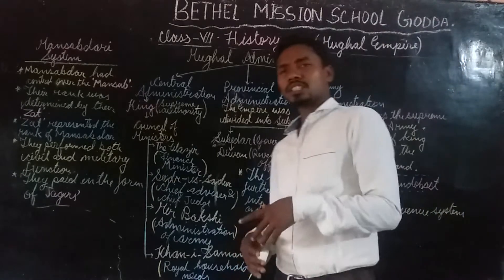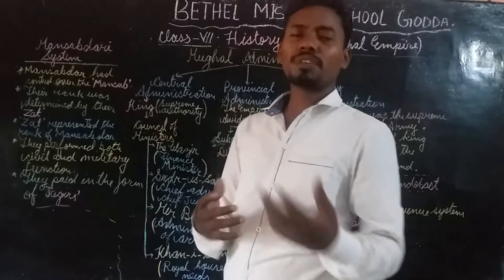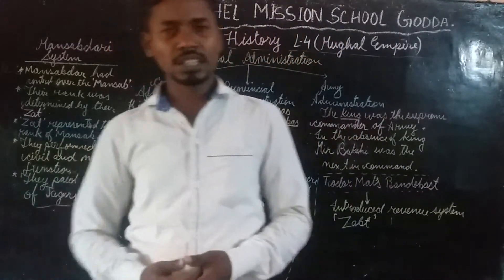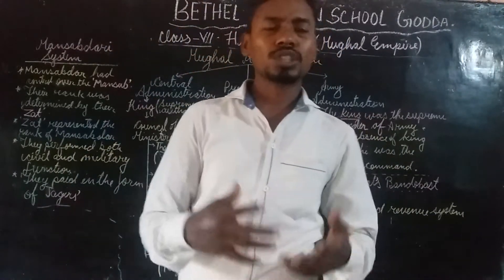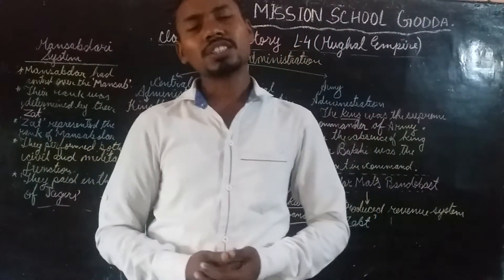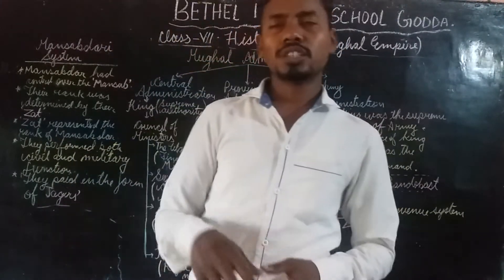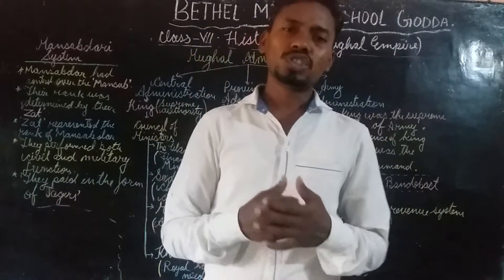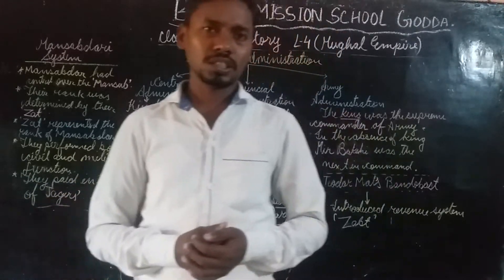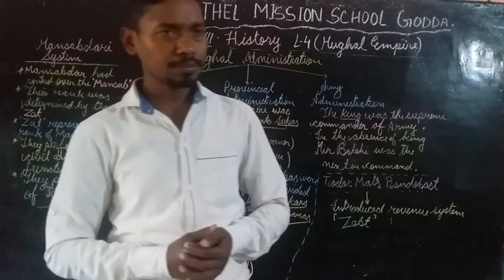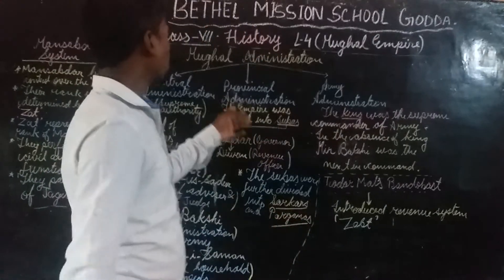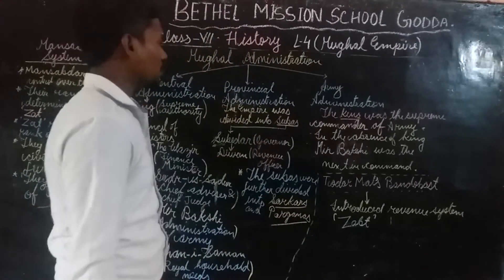The subas were further divided into Sarkars and Parganas. Just as states are further divided into districts, blocks, and so on, the whole of the subas was again divided into Sarkars. This was about provincial administration.